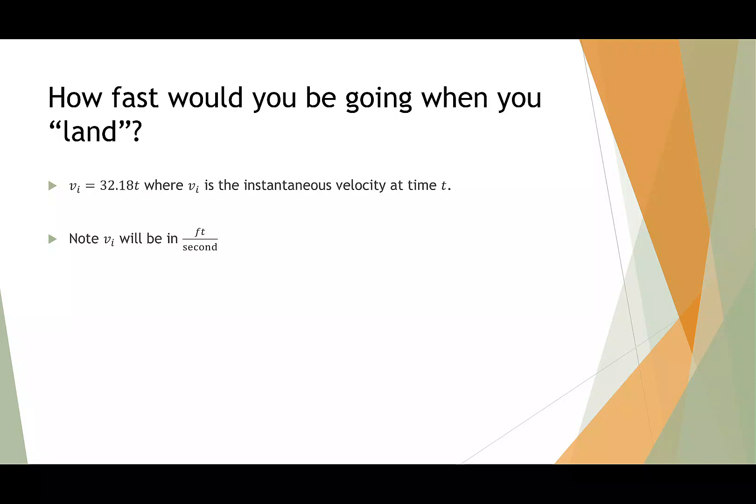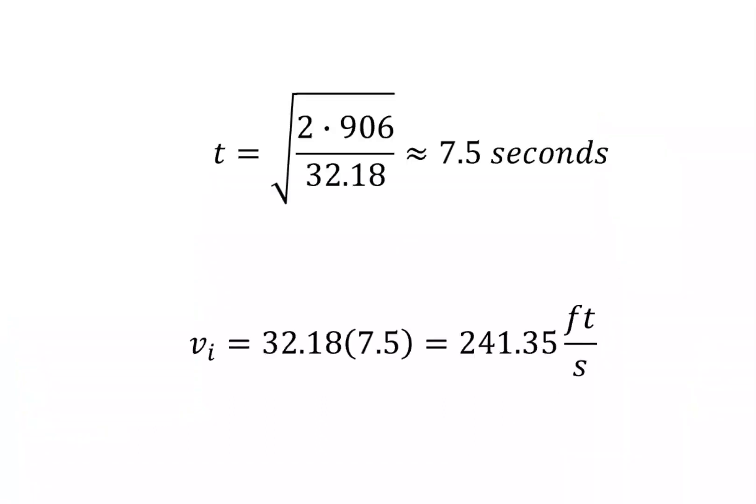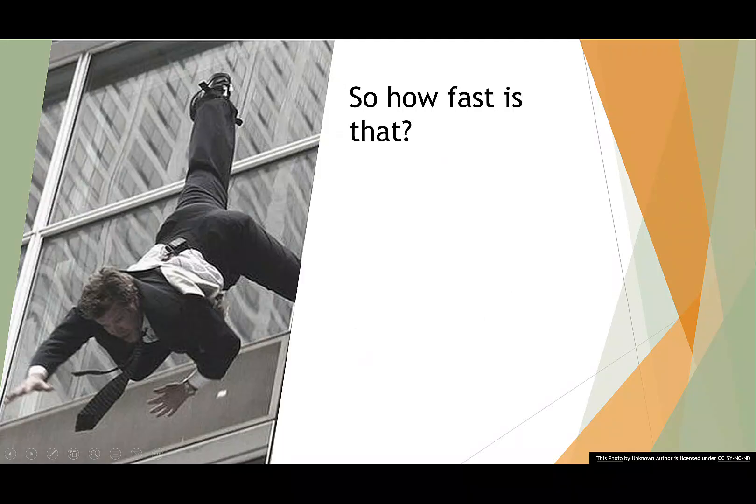32.18 is still in feet per second squared, which means that v sub i is going to be in feet per second. So let's go back to our example of falling from the Eiffel Tower. If we take 32.18, multiply it by 7.5, we get 241.35 feet per second. So how fast is that?